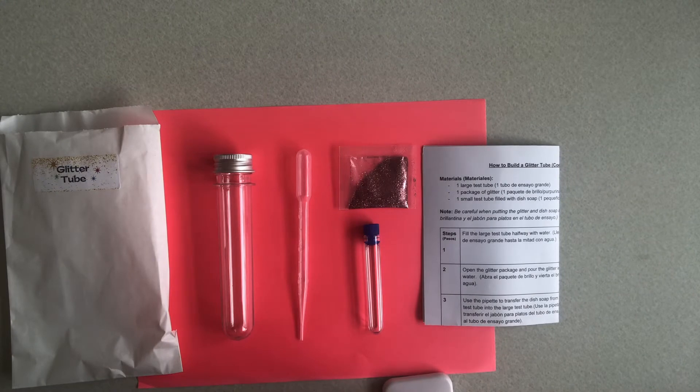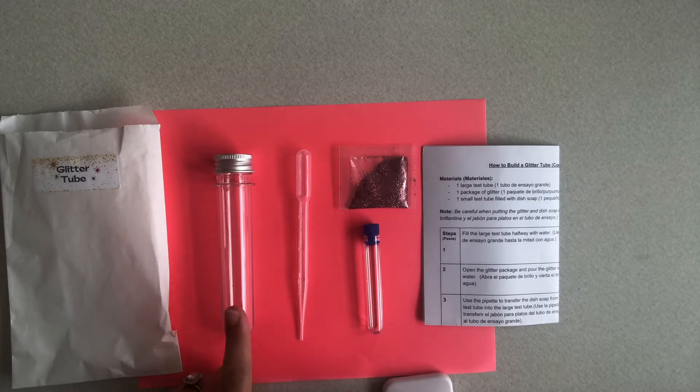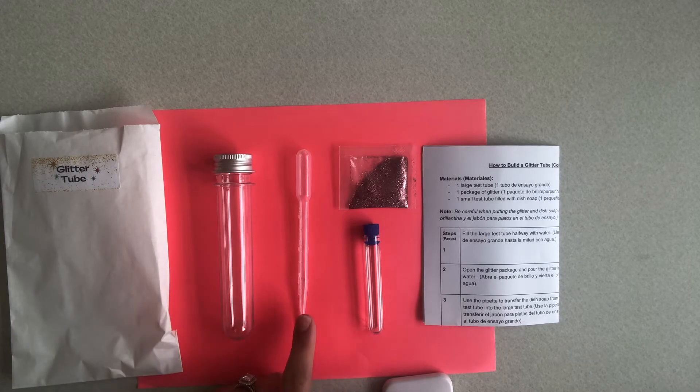When you open up your glitter tube bag, you should have the following supplies: a tube, a pipette, a vial of dish soap, glitter, and your directions.